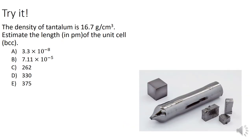Here's an iClicker question. The density of tantalum is 16.7 grams per cubic centimeter. Estimate the length in picometers of the unit cell, given that it is body-centered cubic. The hint is: since we know it's cubic, we can figure out the volume from the density, and then from the volume get the length of one side. Go ahead and pause the video and try it out.